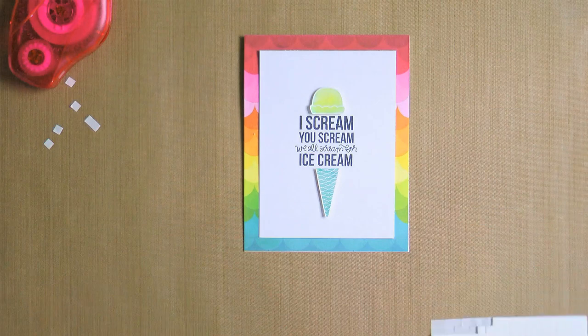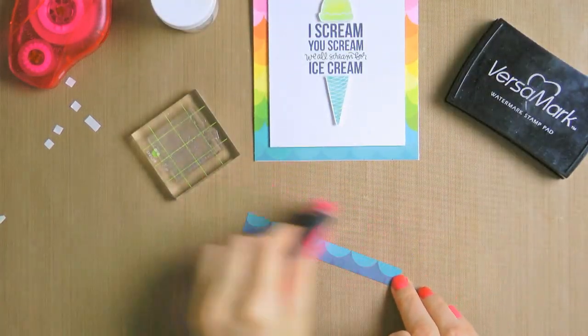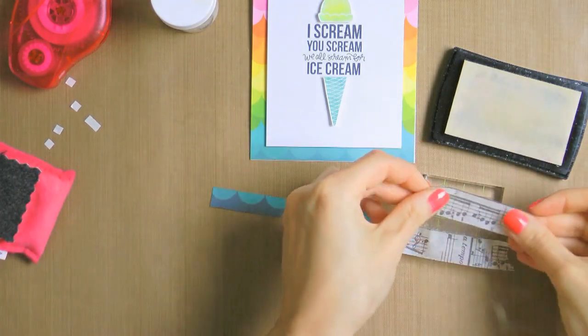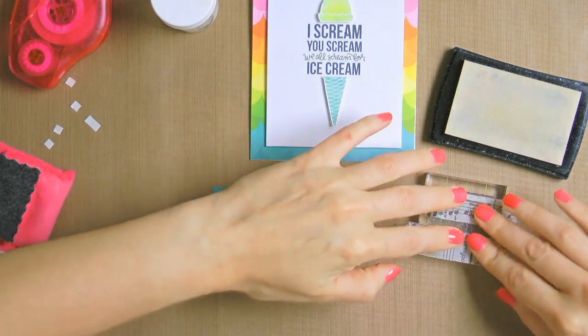I also wanted to highlight the handwritten part of that sentiment, so I decided to heat emboss it on a leftover piece of pattern paper that I used to cover the front of the card. I did some creative masking for this. I masked all areas of the sentiment except for that handwritten part.